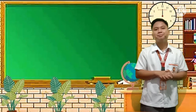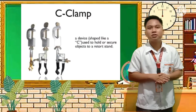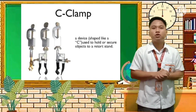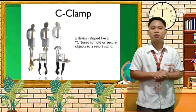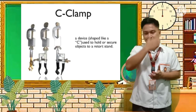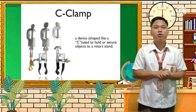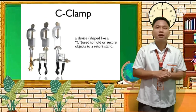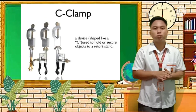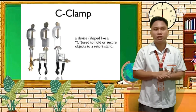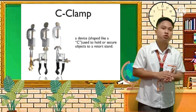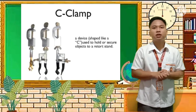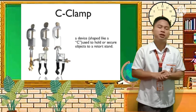Next we have the C-clamp. It is a device shaped like a C — hence the name. It is used to hold or secure objects to a retort stand. The C-clamp works together with the retort stand to secure tubes and other equipment so nothing falls during experimentation. It is essentially a holder.